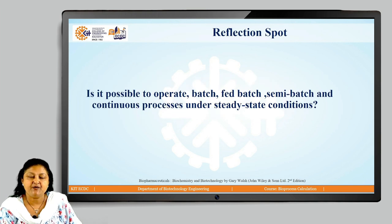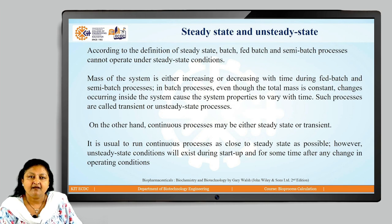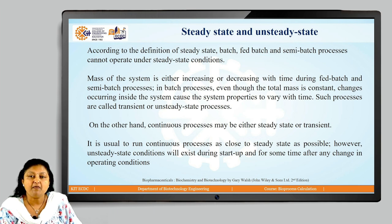Based on the above concept, can you answer this question: is it possible to operate batch, fed-batch, semi-batch, and continuous processes under steady state conditions? As we have discussed, fed-batch, batch, and semi-batch processes cannot operate under steady state conditions. Because mass of the system is either increasing or decreasing with time during fed-batch and semi-batch processes. In batch processes, even though the total mass is constant, changes occurring inside the system cause the system properties to vary with time. Such processes are called transient or unsteady state processes.